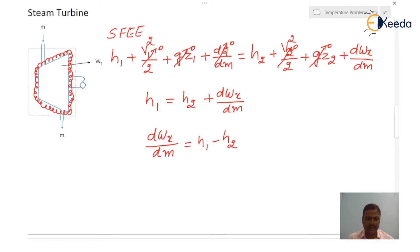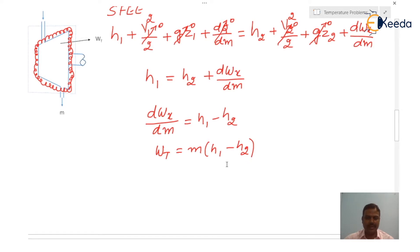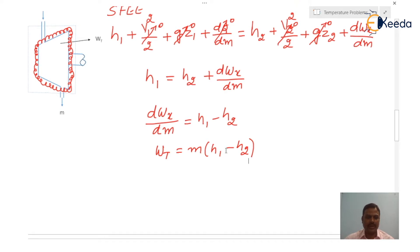Here Wx is shaft work, and in this case it is turbine work. So it is WT equal to m into (H1 minus H2). The turbine work produced is equal to the enthalpy change H1 minus H2. This is the result of the first law of thermodynamics applied to a flow process in the case of a turbine.